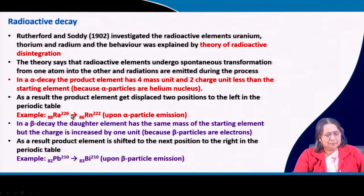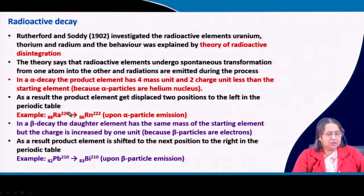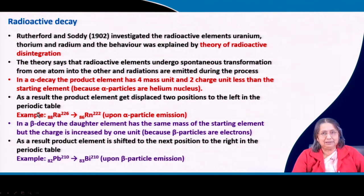The example given here is radium. Radium-226: 226 is the atomic mass and 88 is the atomic number. When radium emits one alpha particle, the atomic mass is reduced by 4, becoming 222, and the atomic number is reduced by 2, becoming 86. So the product element radon occupies a position 2 units to the left of radium in the periodic table.